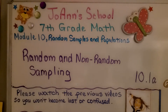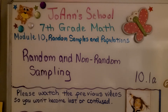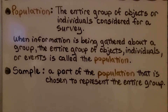We're in module 10 now about random samples and populations. This is 10.1a. We're going to discuss random and non-random sampling so you can completely understand this lesson. Let's start with some definitions.